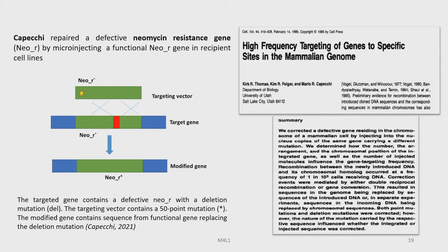He summarized that he corrected a defective gene residing in the chromosome of a mammalian cell by injecting into the nucleus copies of the same gene carrying a different mutation. In brief, you can see a targeting vector and a target gene, resulting in a modified gene. The targeted gene contains a defective neomycin resistance with a deletion mutation, while the targeting vector contains a point mutation, and the modified gene contains sequences from the functional gene replacing the deletion mutation.